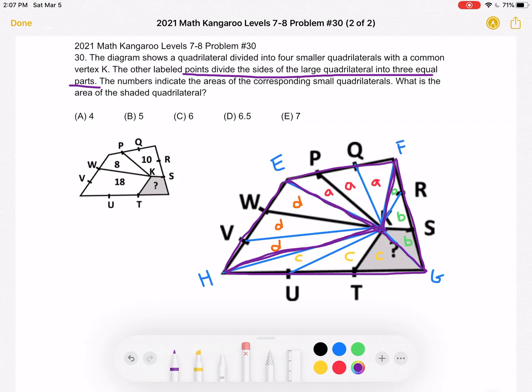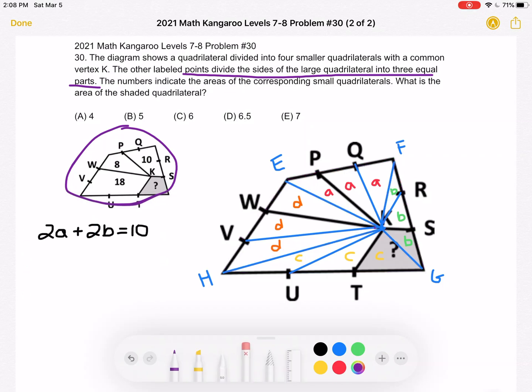And with this information we can set up a few equations given the information from this diagram over here. For example, we have that 2A plus 2B is equal to 10. We know this from this quadrilateral right here, which is equivalent to this part. We also know that 2C plus 2D is 18 and that's this quadrilateral over here.